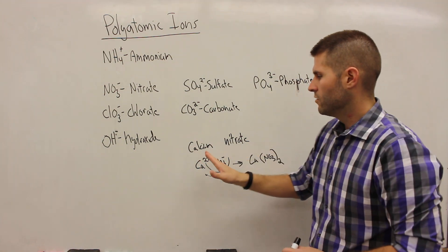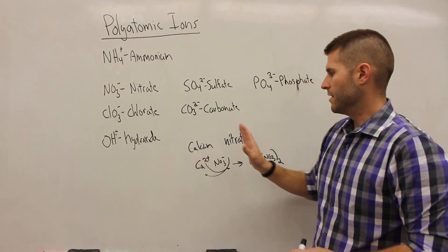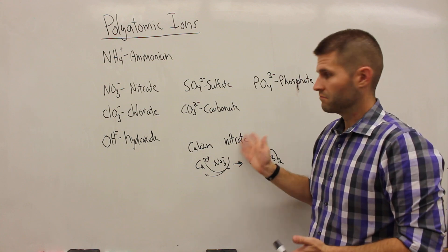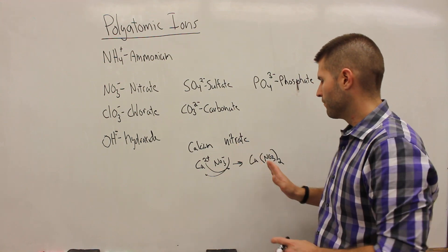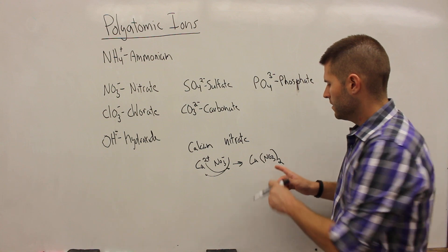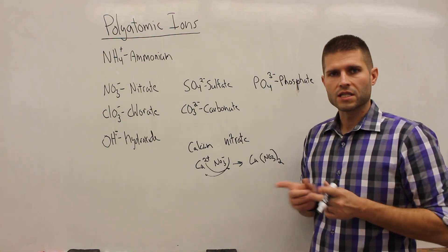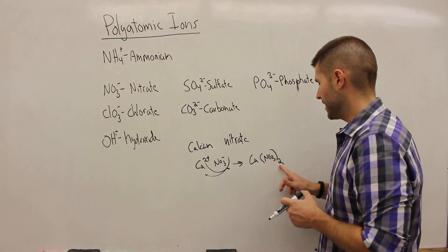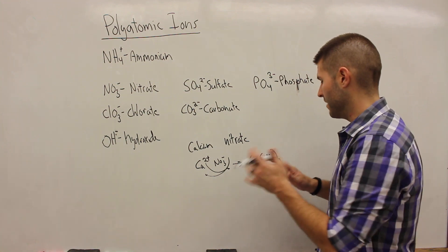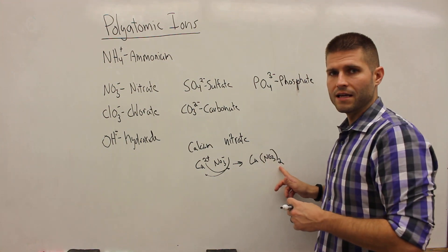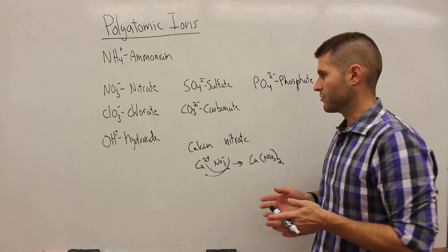We have the naming system. We say the name of the cation, and then we just say the name of the polyatomic. Pretty simple. The formula is written slightly differently. The polyatomic, if there's more than one of them, we have to put a parentheses around that polyatomic and indicate how many of those polyatomics are needed to balance out the charge with a subscript on the outside of that parentheses.